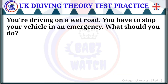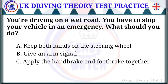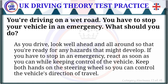Question 17 of 28: You're driving on a wet road and have to stop your vehicle in an emergency. What should you do? The correct answer is: keep both hands on the steering wheel. Look well ahead and all around so that you're ready for any hazards. If you have to stop in an emergency, react as soon as you can while keeping control of the vehicle. Keep both hands on the wheel to control the vehicle's direction of travel.